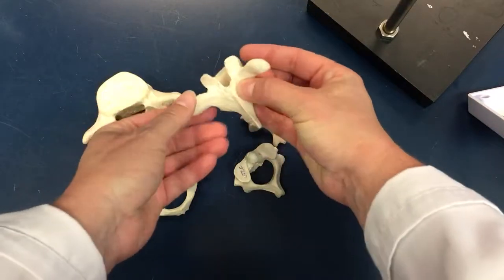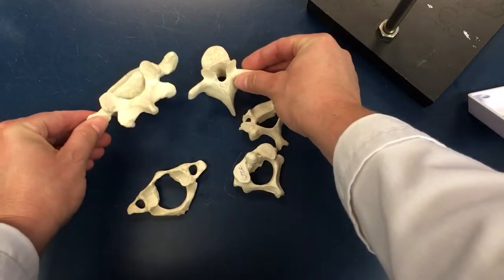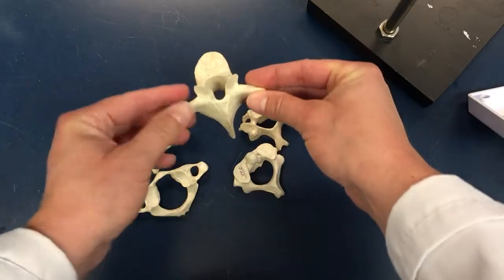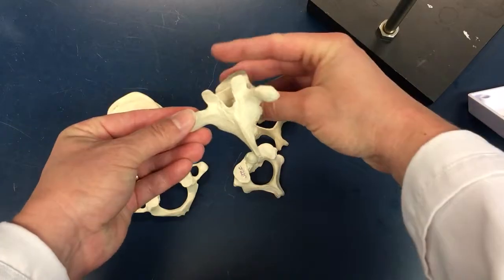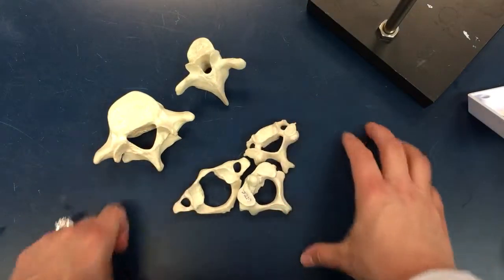The next size down is the thoracic. I say the lumbar kind of looks like a moose and the thoracic kind of looks like a giraffe. These three are all cervical vertebrae.